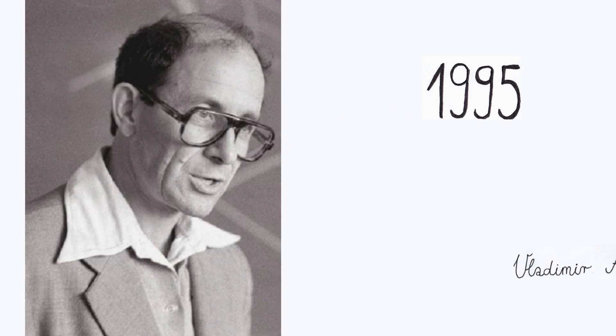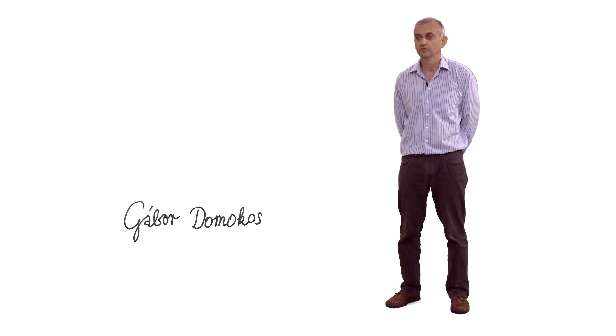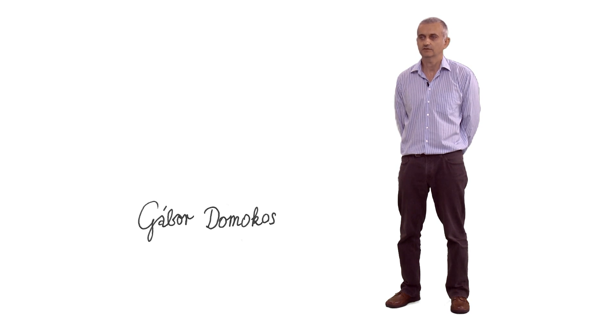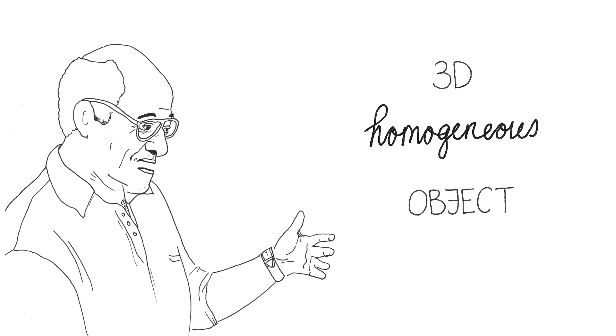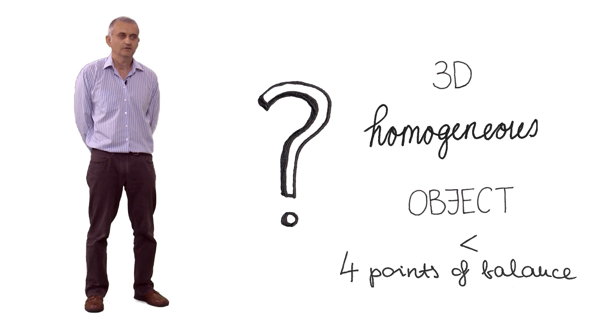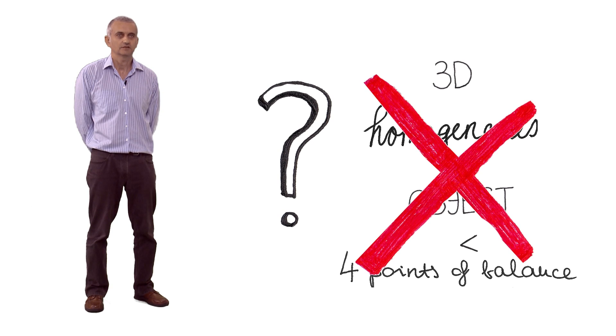In 1995 I had a chance to meet Vladimir Arnold, who I think was one of the most influential scientific minds of the 20th century. He presented me with a question: whether a three-dimensional homogeneous object could exist with less than four static equilibrium points. And the general belief was that such an object cannot exist.